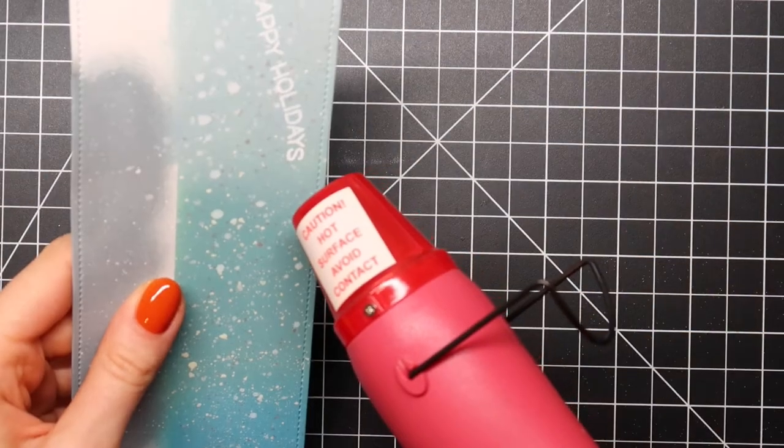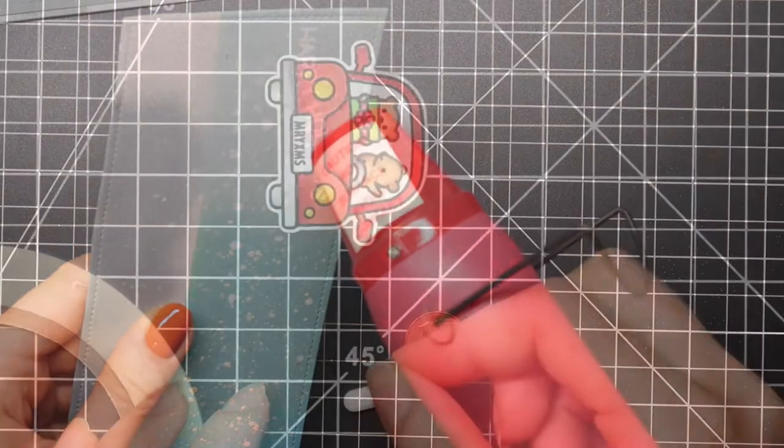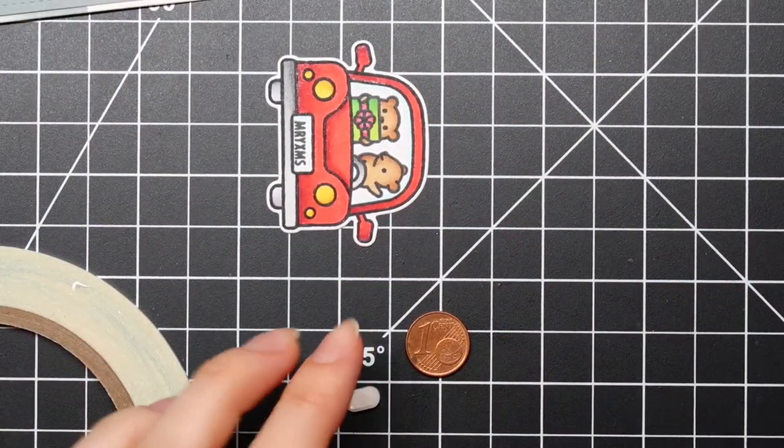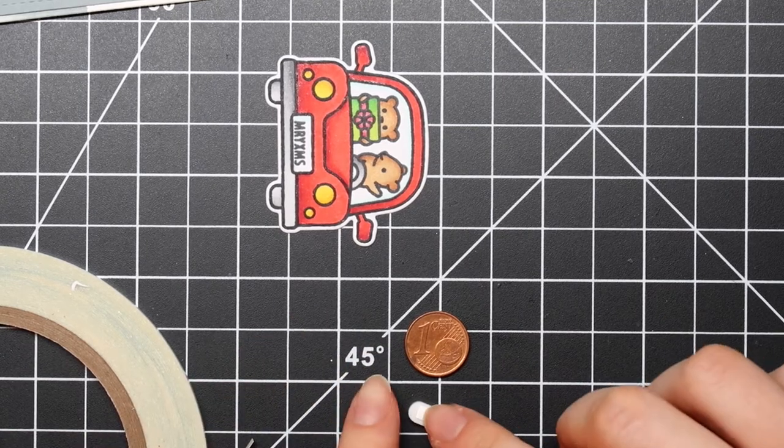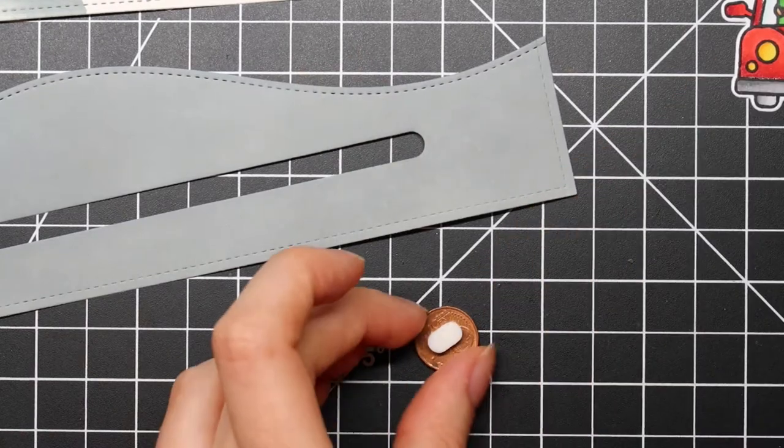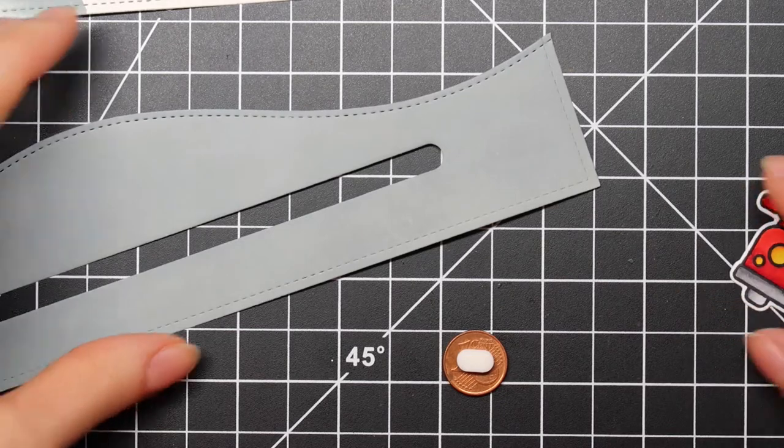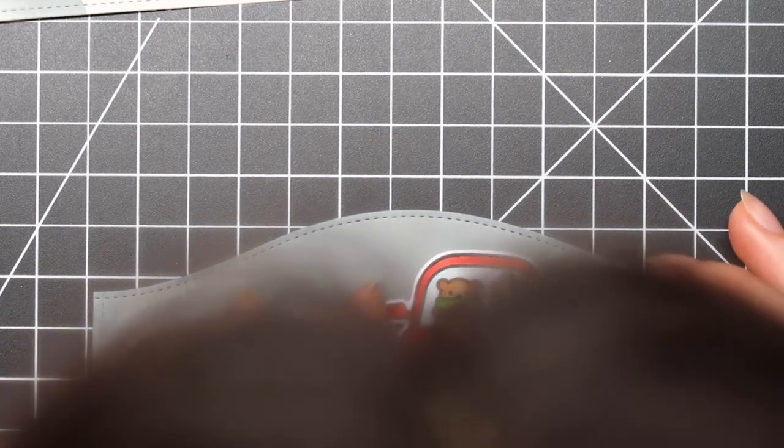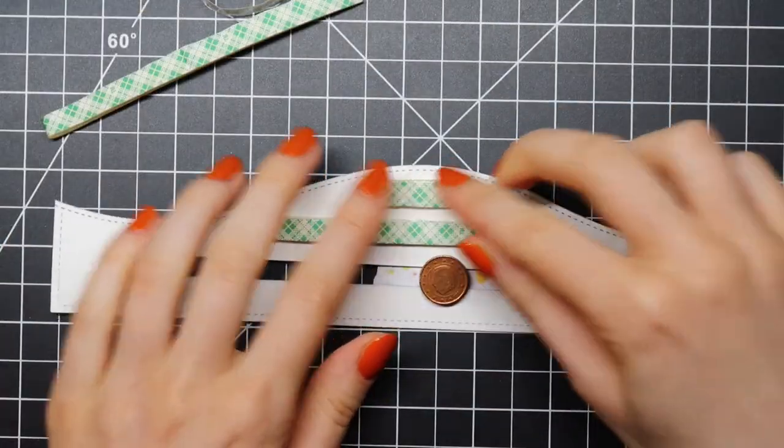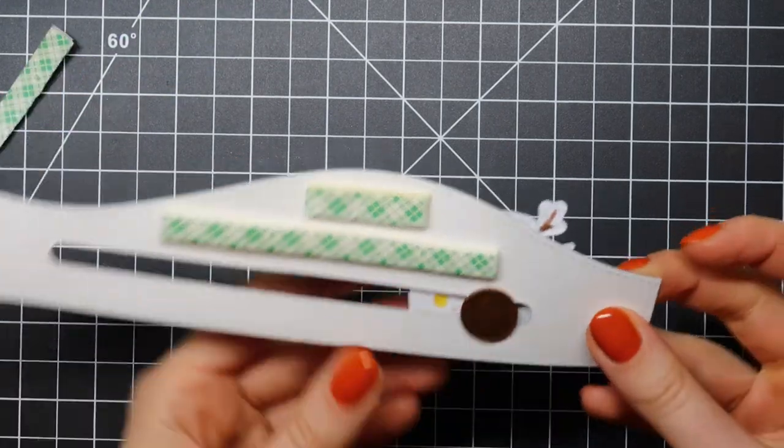After heat setting the embossing powder until it's melted completely, it's time to assemble the slider element. I have this little disc from My Favorite Things, which makes it easy to make your images slide back and forth. I use some double-sided tape to adhere that to my little coin, then position my penny within the slot and adhere my car on top of the penny. It's that easy.